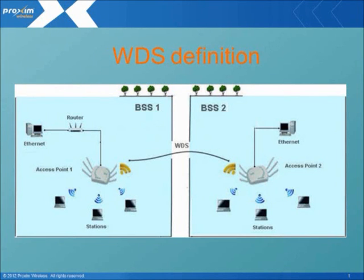A Wireless Distribution System (WDDS) helps establish a wireless link between two BSS and allows the clients of one BSS network to communicate with the clients on the other BSS network. WDDS also helps in extending the wireless LAN where it is difficult to use wired Ethernet to relay packets between the networks.